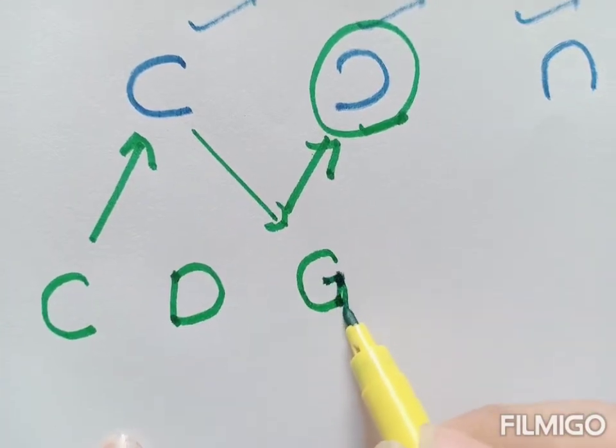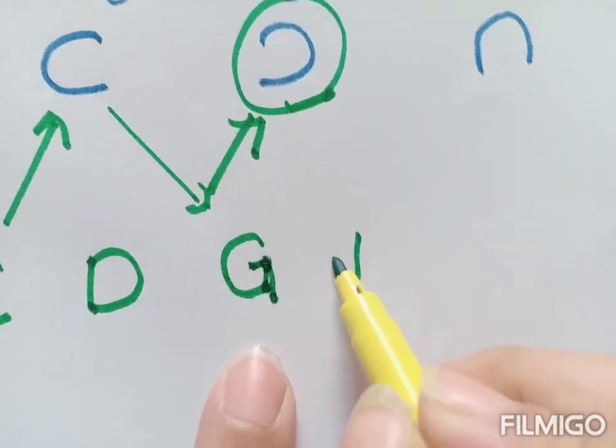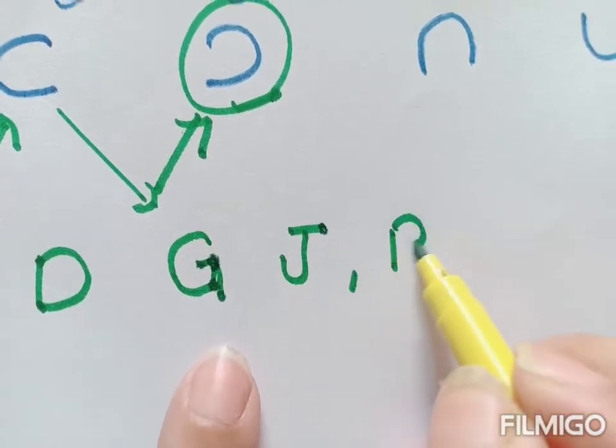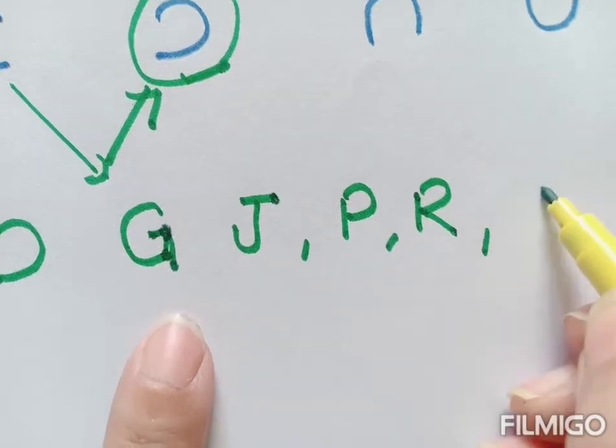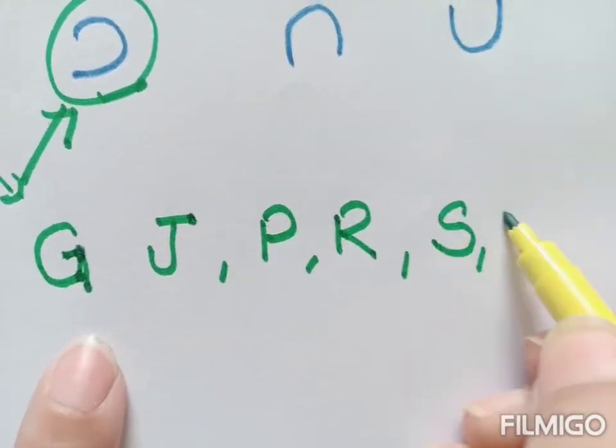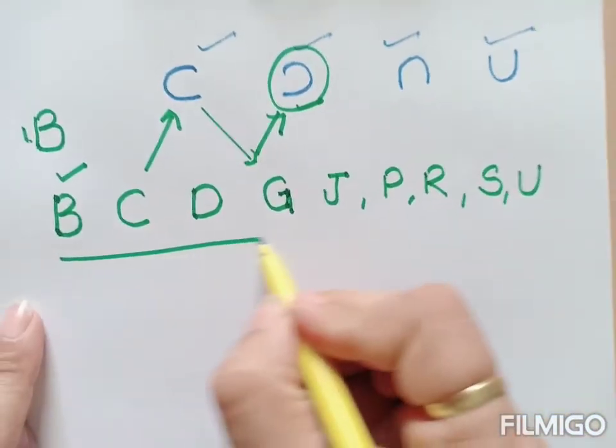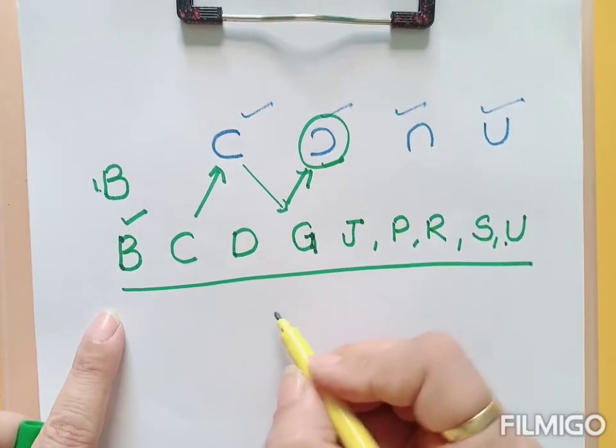then backwards and will come back again. This is G, then J, then P, then R, then S, and then U. So these all these letters we are going to make, all these letters we are going to write these